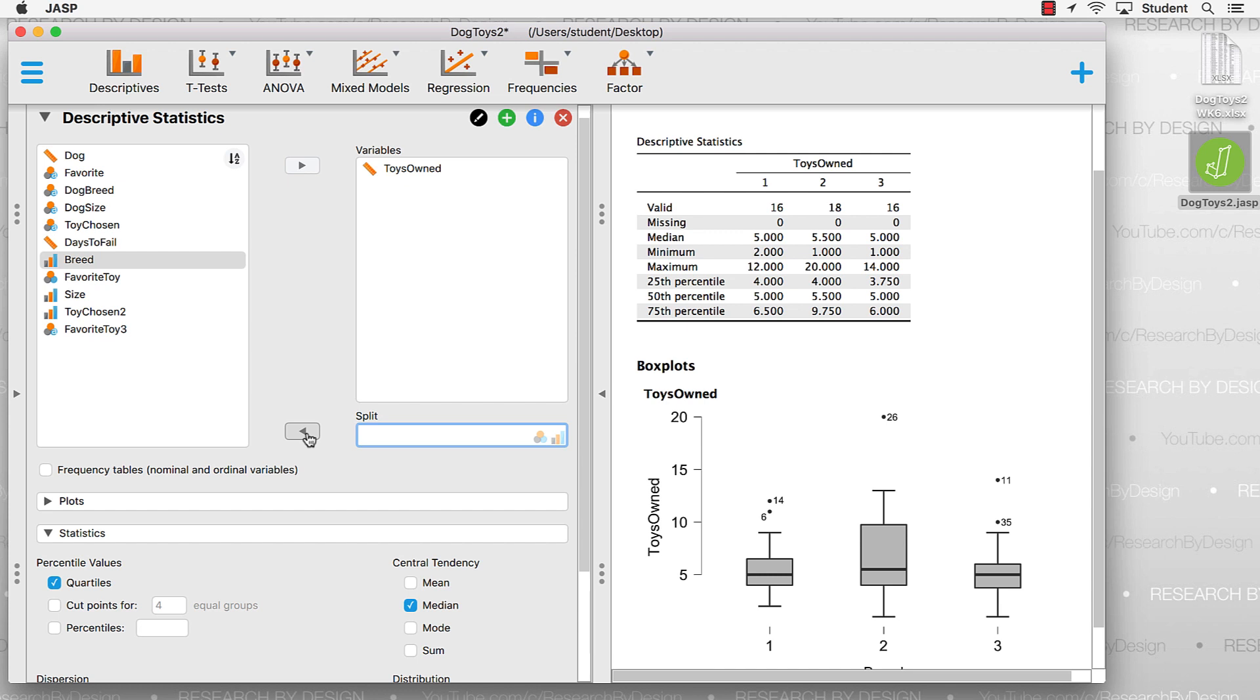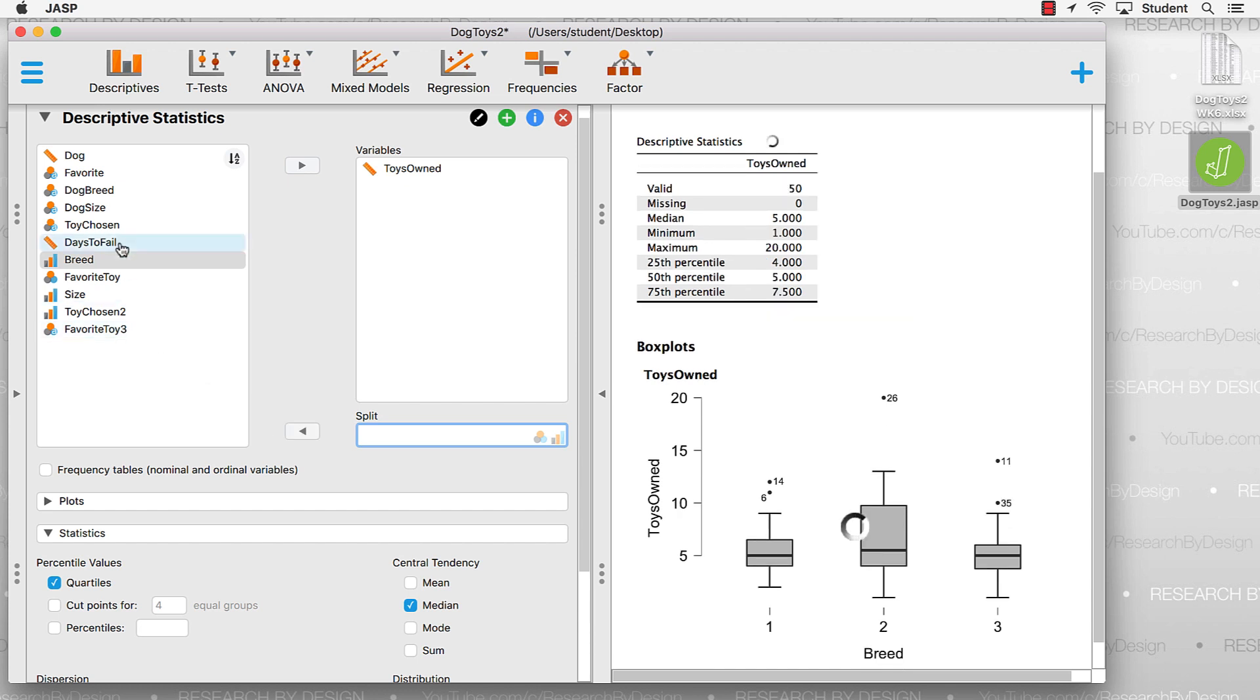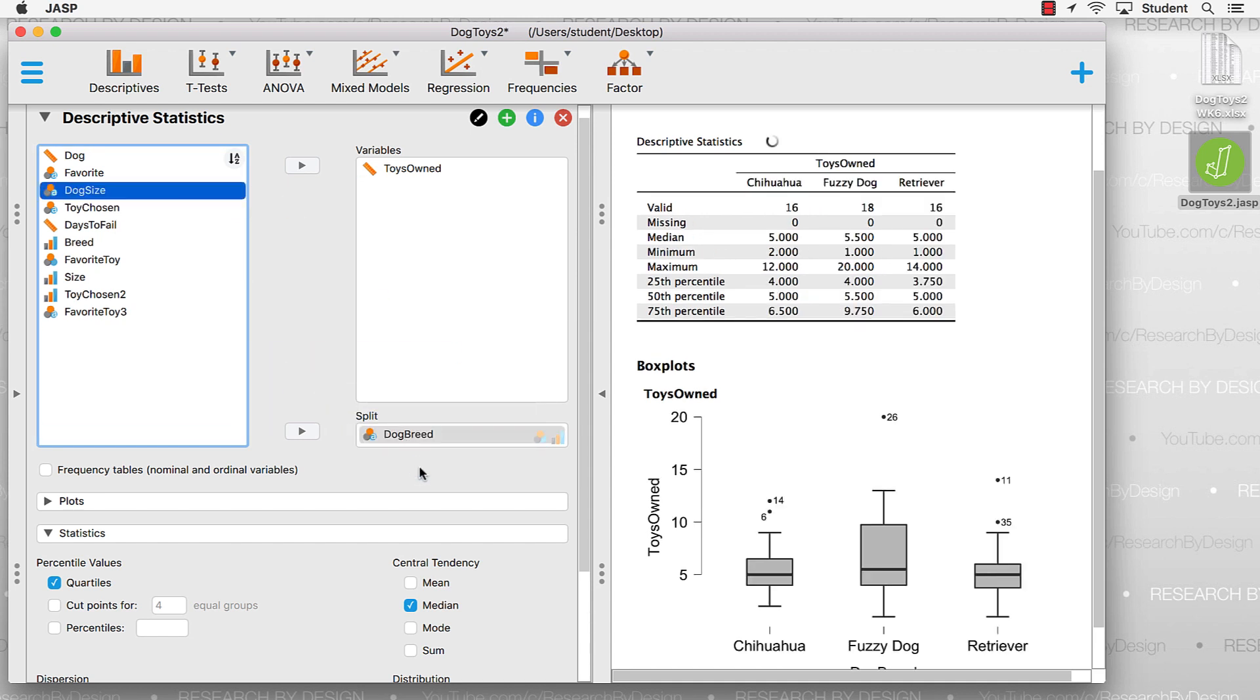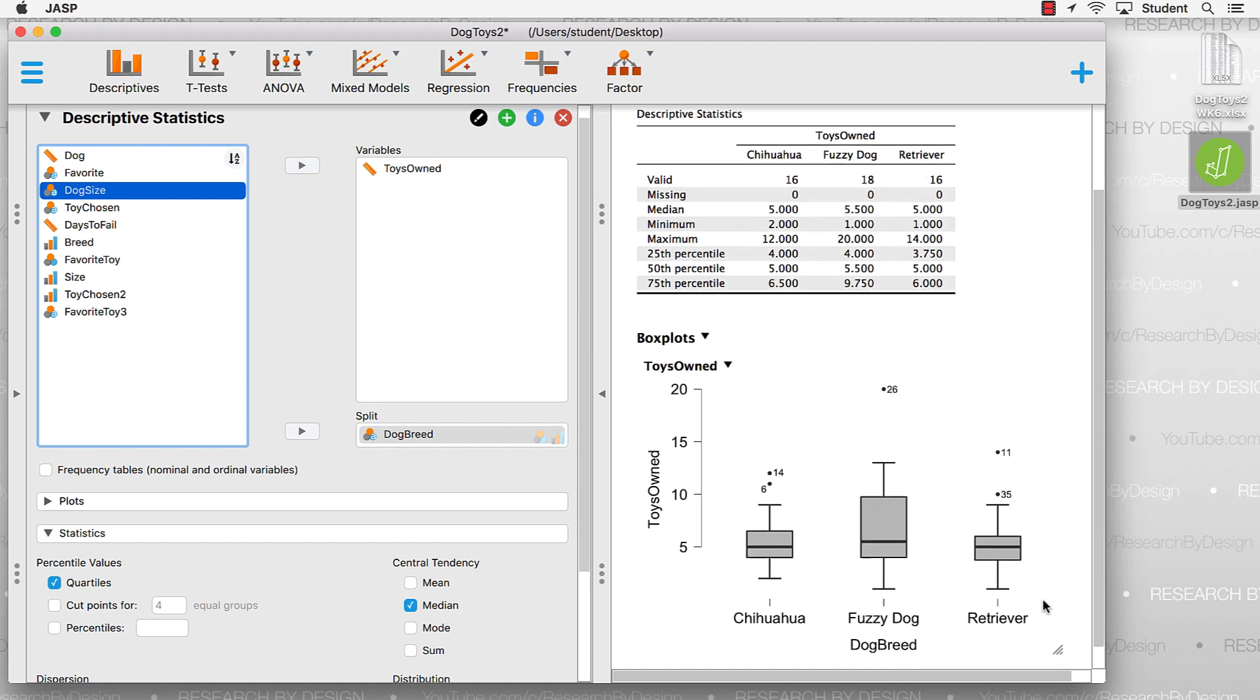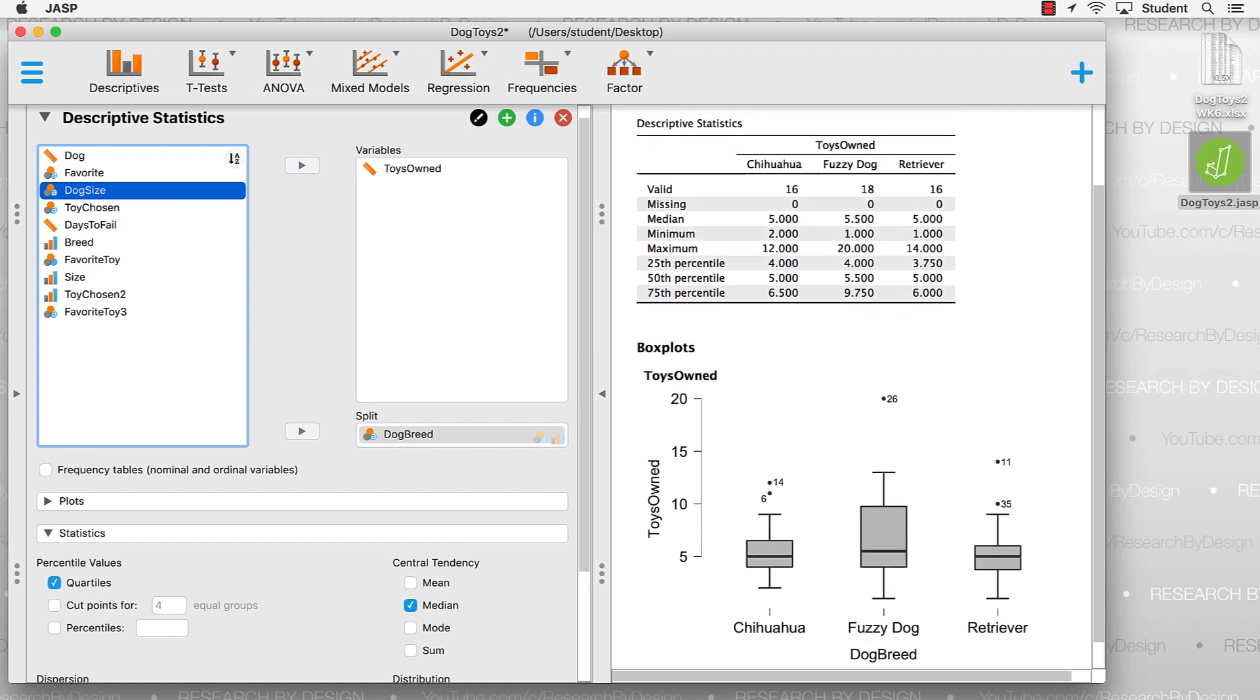Okay, this is good, but this is for a single variable. What if we want to split our ToysOwned by DogBreed? Simple enough to do. In the list of variables, find DogBreed, and drag that to the Split box. In the results window, we now see a new list of descriptive statistics. ToysOwned split by the three breeds of dogs. We also now see side-by-side box plots. This will allow us to make comparisons between the breeds of dogs.